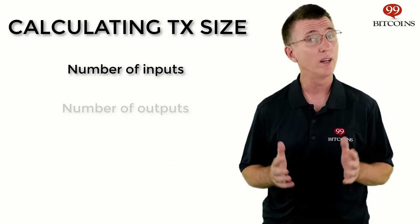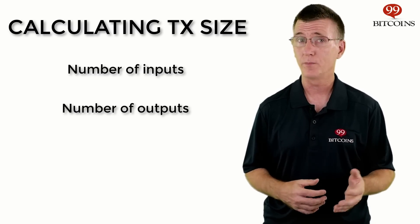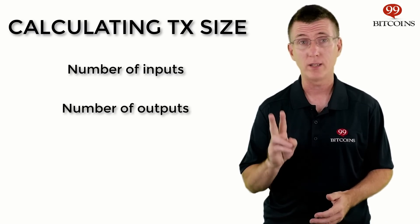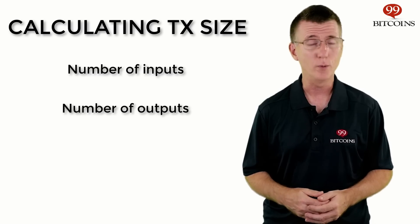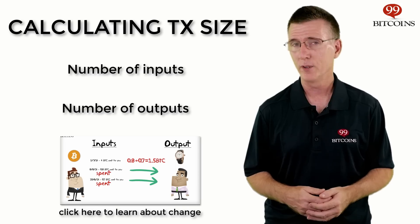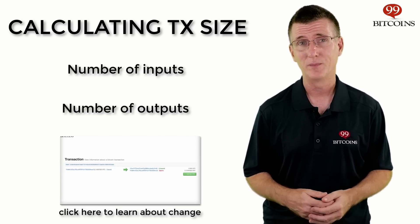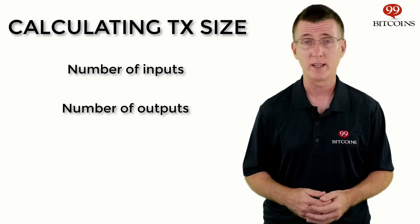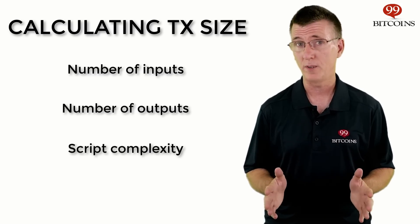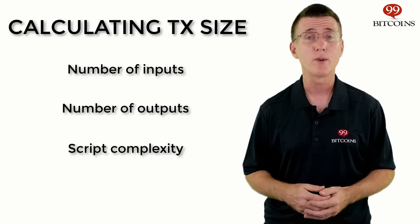The second factor is the number of outputs. Simply put, outputs are the number of addresses you're paying to. For example, if you're only paying to one address, it's highly likely you'll actually generate two outputs — one for the address you're sending to, and another one to pay yourself back the change of your initial payment. For an explanation about change, take a look at our Bitcoin Change Explained video. The last significant factor is script complexity. Some transactions use special features like multi-sig, which increase the transaction size.